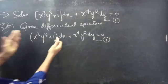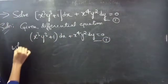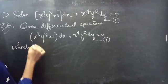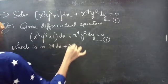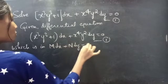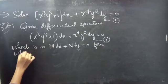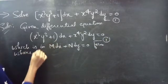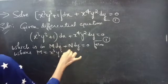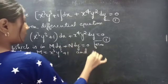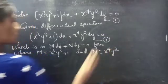It is in M dx plus N dy equals 0 form. Now, by comparing the two expressions, we get M equals x-cubed y-cubed plus 1, and N equals x to the power 4 y-squared.